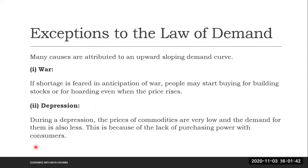There are many causes attributed to an upward sloping demand curve, and one of them is during war. If a shortage is feared in anticipation of war, or violence, or epidemic like COVID, people may start buying to build stock or for holding, even when prices are rising. In the recent COVID outbreak in Kenya in March, we saw people buying many items to stock, even though prices were high. They bought sanitizers at very high prices because they anticipated there would be a shortage.